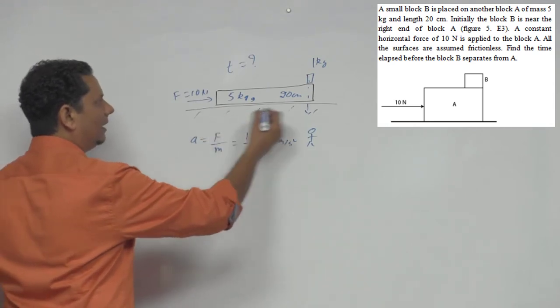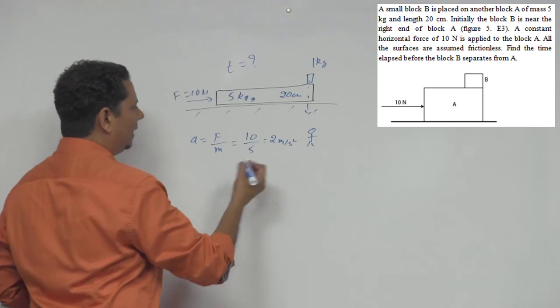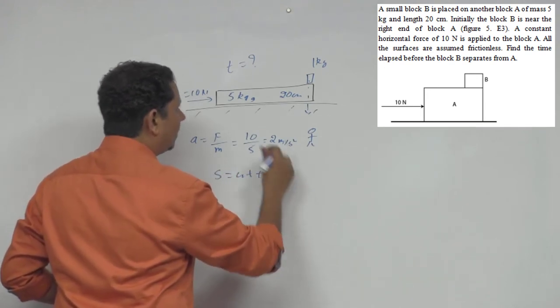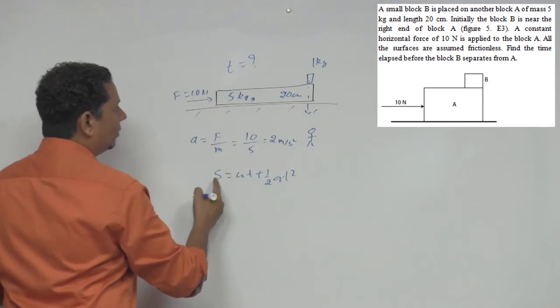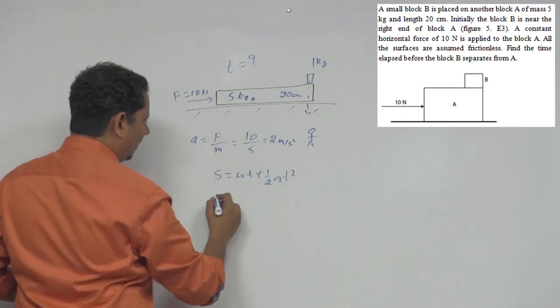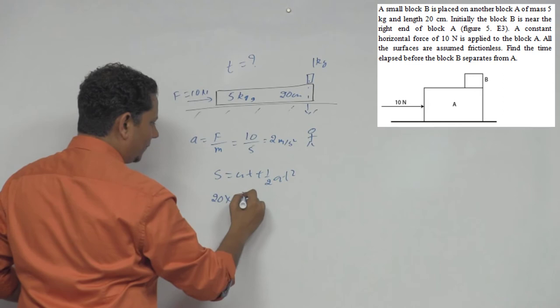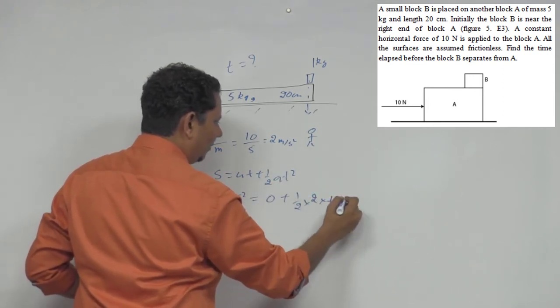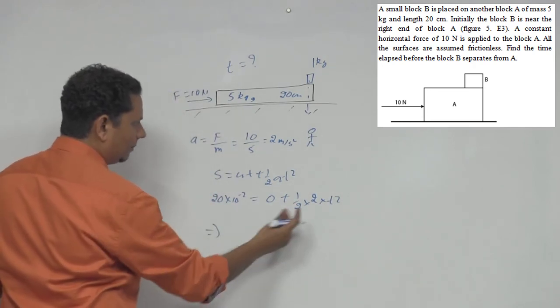So this is your acceleration. Now in that case, if we see how much - if we apply the second equation here, s equals ut plus half at square for this block. The s that has to travel from here is 20 centimeter. Initial velocity is 0, half a is 2, multiplied by t square.